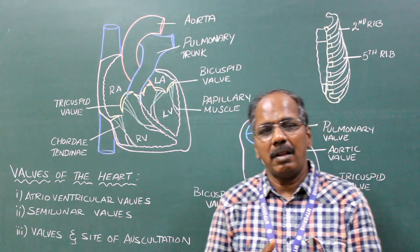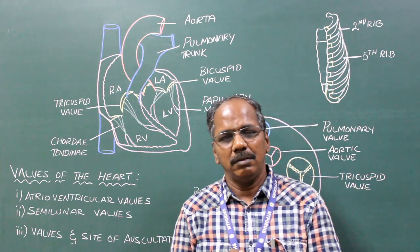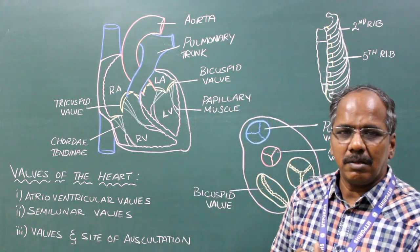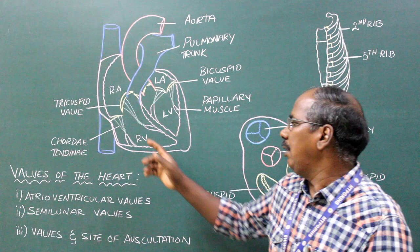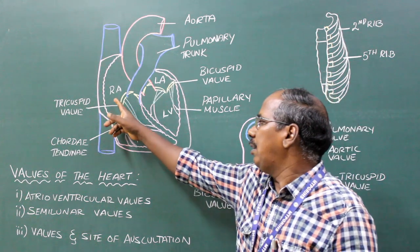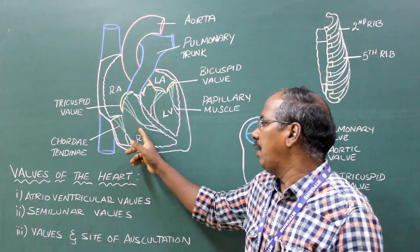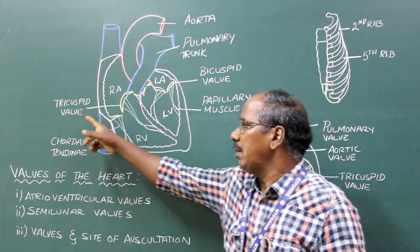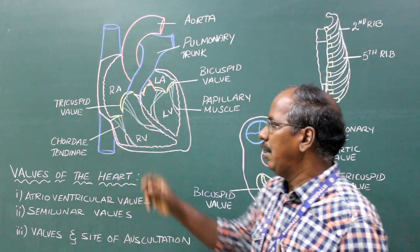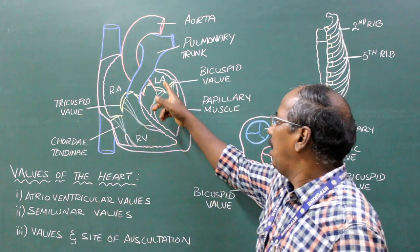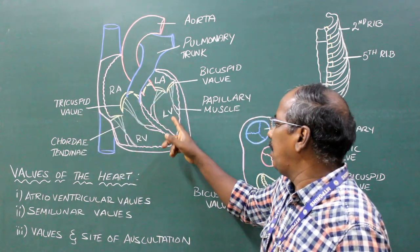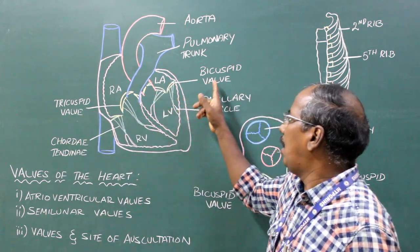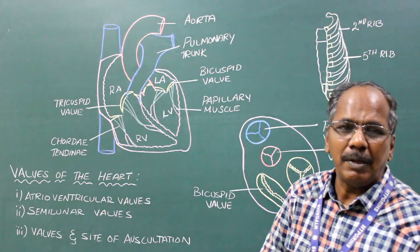Atrioventricular valves. There are two atrioventricular valves. Number one, the right atrioventricular valve or tricuspid valve. Number two, the left atrioventricular valve or bicuspid valve.